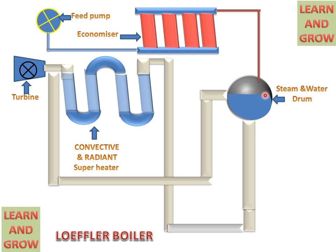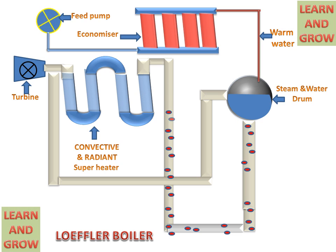The preheated water will go to the steam and water drum. The heated water in the steam and water drum is converted into steam, and this steam will go to the superheater tubes and will be superheated.